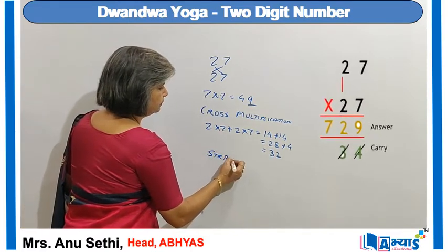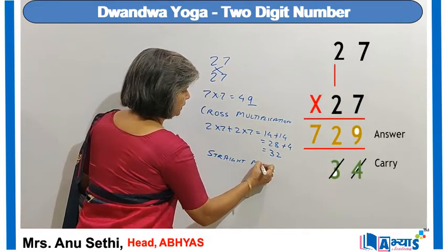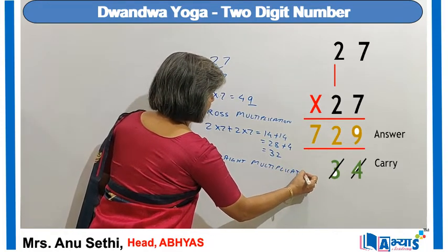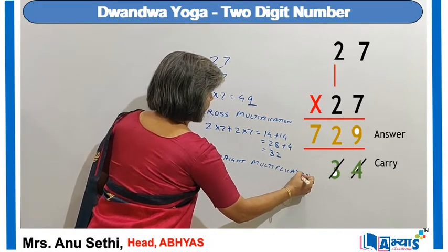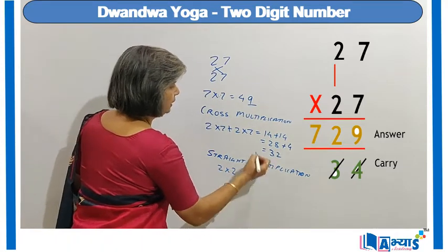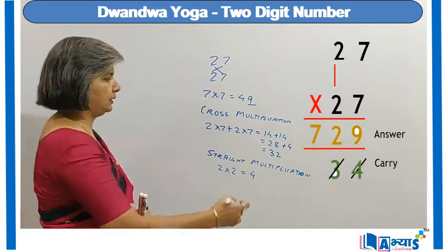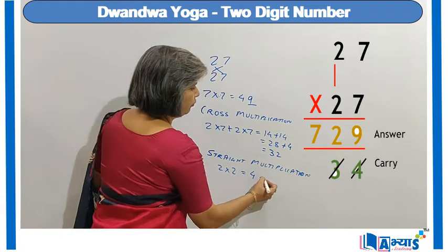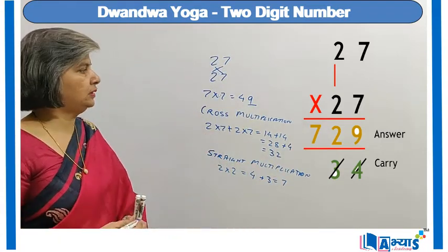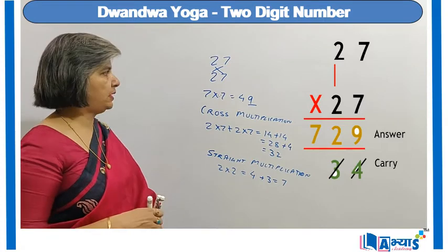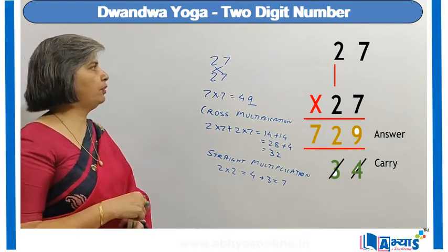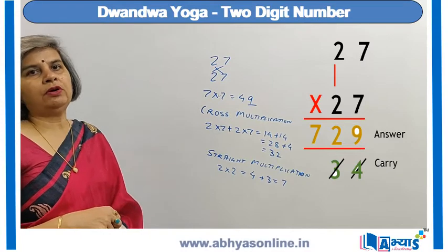In the third step I again perform straight multiplication: 2 into 2 is 4, and I add the carry of 3, so 4 plus 3 gives 7. This 7 is placed in the answer, so the final answer becomes 729.